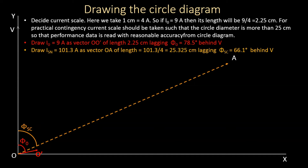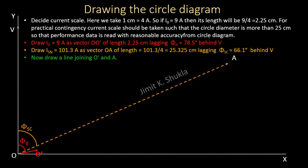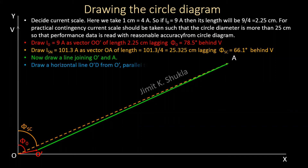The endpoint of vector OA is named point A. Next, we draw a line joining O' and A. Then we draw a horizontal line O'D from O' parallel to the horizontal axis OX.